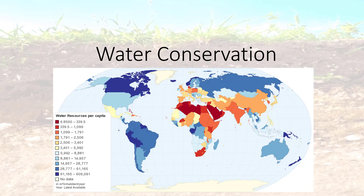Our world contains a lot of water, the vast majority residing in the oceans. We need fresh water to drink, cook, wash dishes, or irrigate. That is much more limiting.